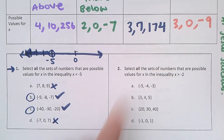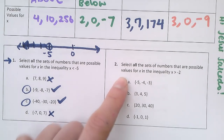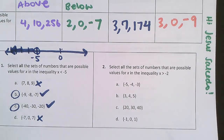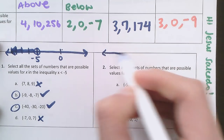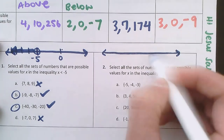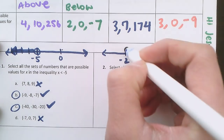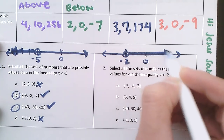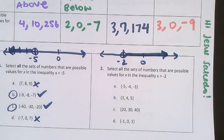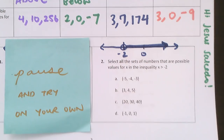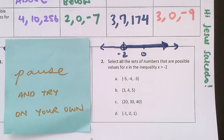Now try number 2 on your own. This one asks: if x is greater than negative 2, which sets of numbers work? If you need help, you can start by drawing a number line with negative 2 marked, and look for all numbers to the right of negative 2. Pause the video, try it on your own, and resume when you're done — we'll be starting on the next page.